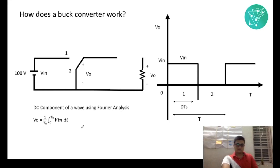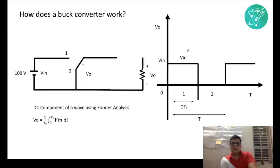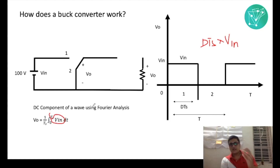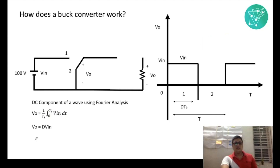So the integral component of the Fourier analysis gives you D·Ts times V in. When you divide by Ts, your V output equals D times V in. That is the fundamental relation between output and input for a buck converter, where D is the duty cycle.